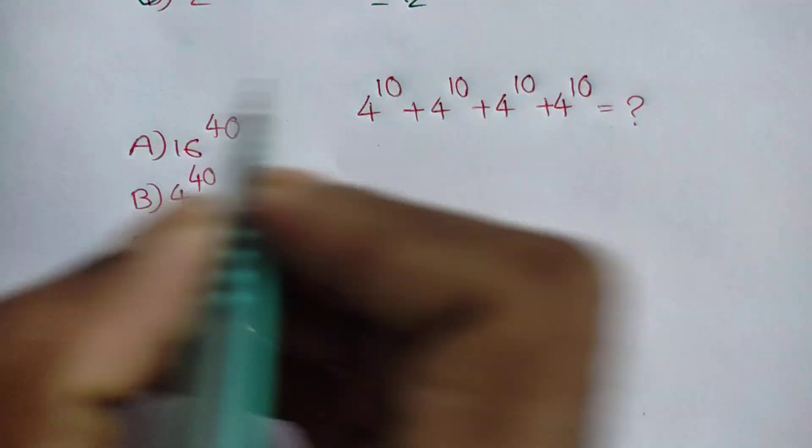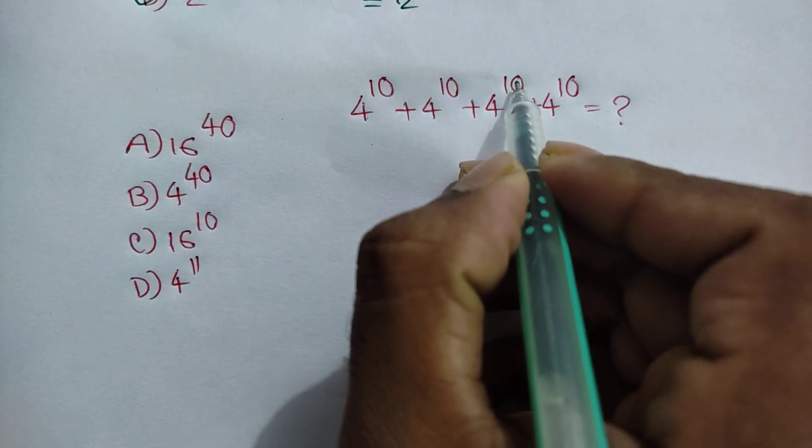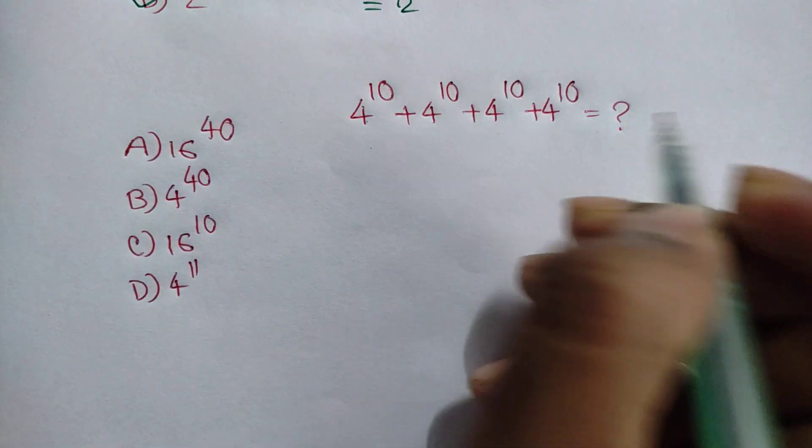Hi everyone, how to solve 4 power 10 plus 4 power 10 plus 4 power 10 plus 4 power 10 is equal to what?